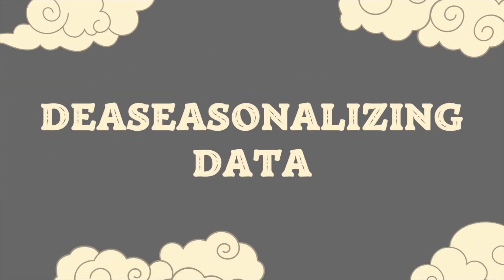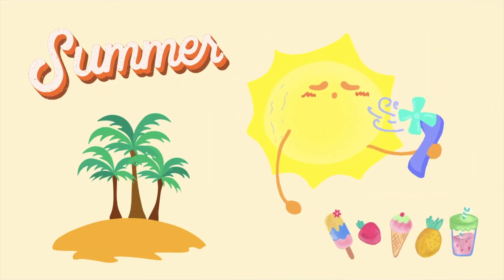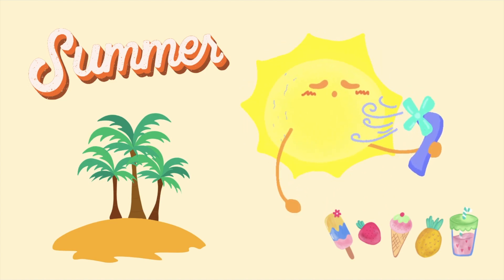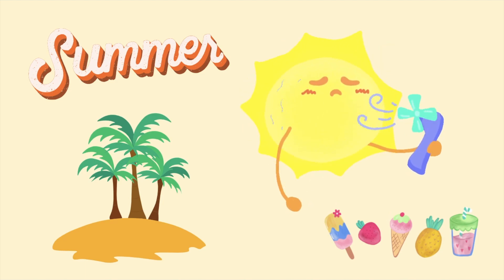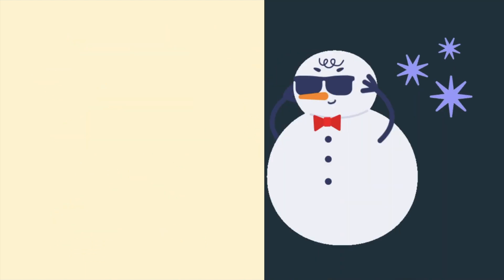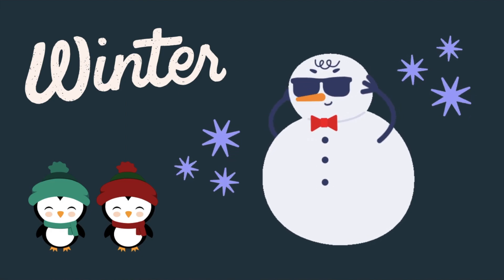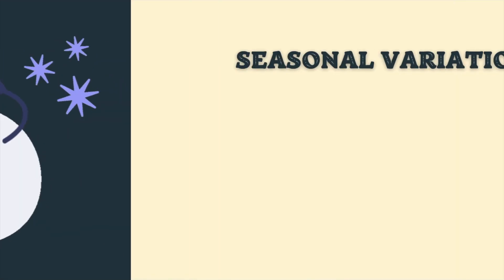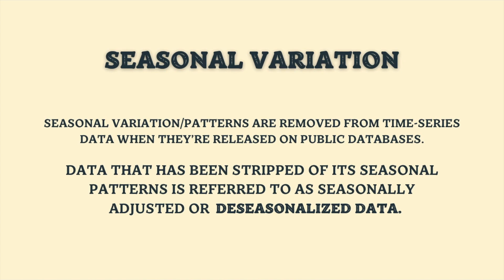Hello guys, welcome to Artificial Channel. In this video we will talk about how to de-seasonalize data for forecasting. We know that temperatures vary with the seasons, generally warm in the summer and cold in the winter. This kind of change in the data is called seasonal variation.